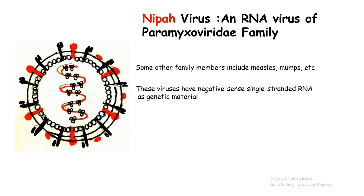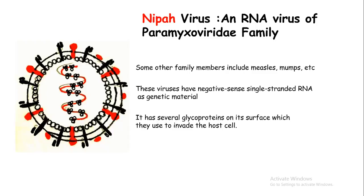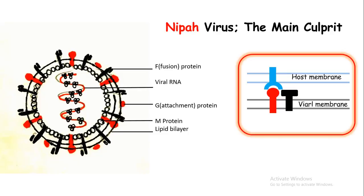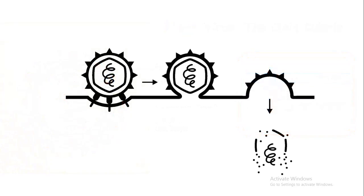Nipah virus has negative-sense single-stranded RNA as its genetic material. Apart from that, it has several surface glycoproteins which it uses to invade host cells — that means human cells. Some glycoproteins, marked in black here, are known as fusion proteins, which help the virus fuse itself inside human cells. There are also attachment proteins which help the virus attach to a host cell. The host cell membrane has receptors that interact with these viral membrane glycoproteins, and this interaction leads to the entry of the viral genetic material inside the host. Once inside, it can replicate, make even more virus — an army of virus — and invade several other cells of the body.